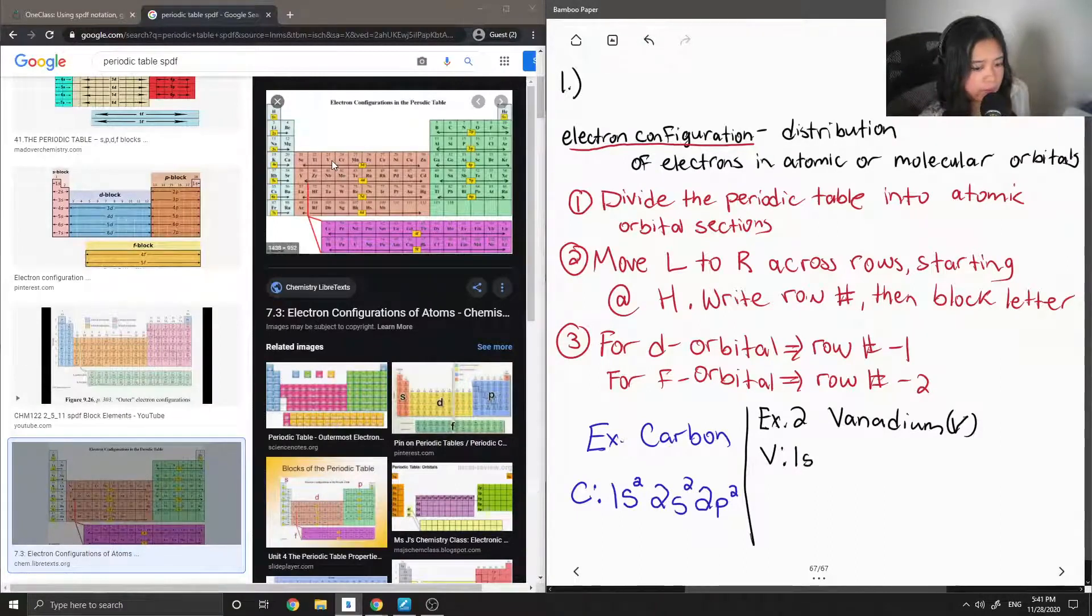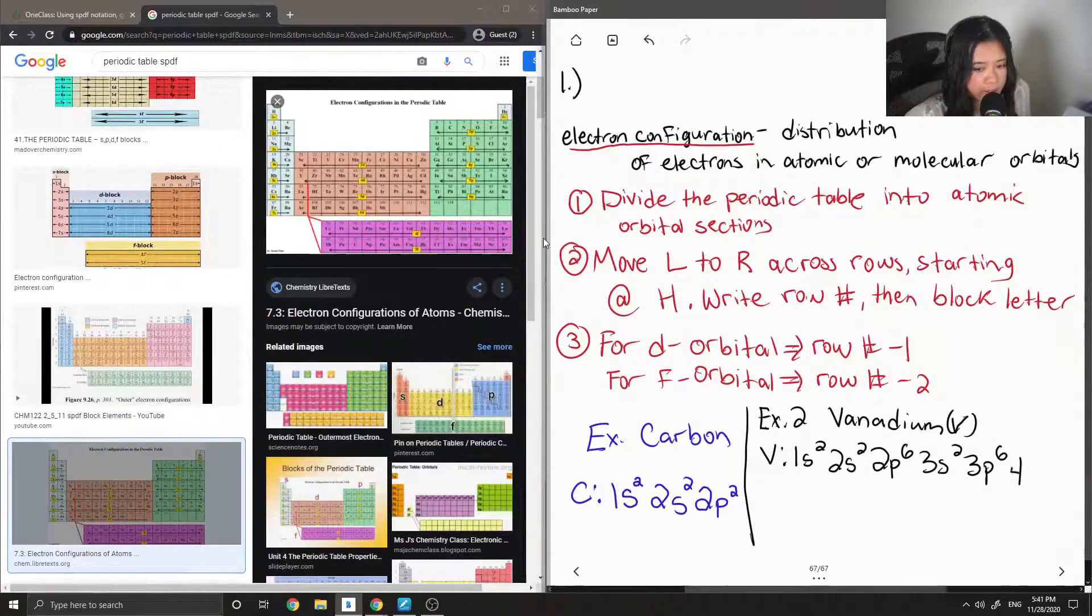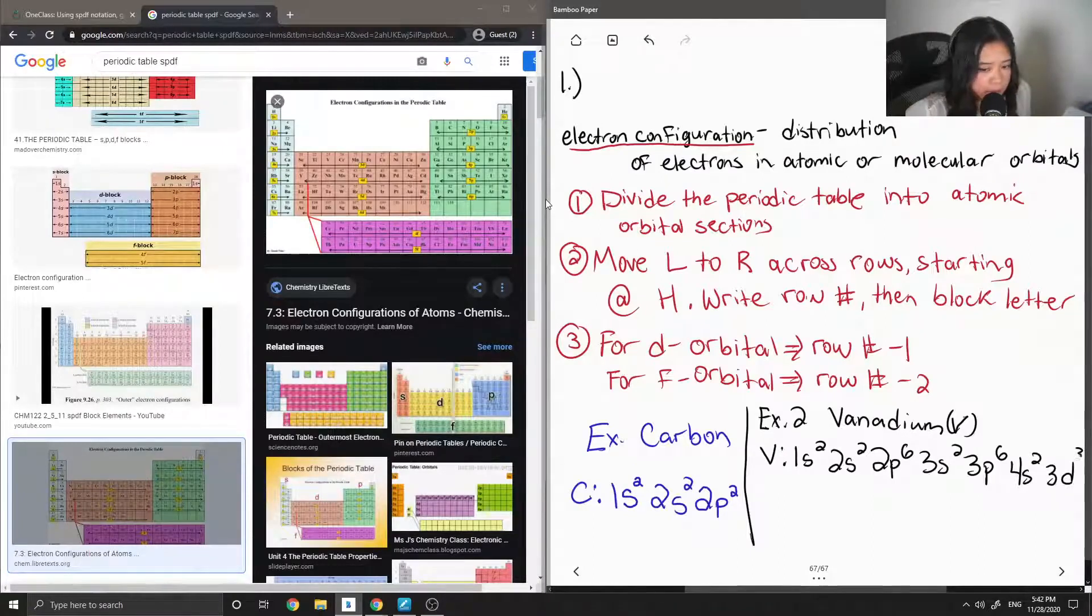It's going to be 1s2, 2s2, 2p6, 3s2, 3p6, 4s2. And then counting up to vanadium, 1, 2, 3. So 3d3.